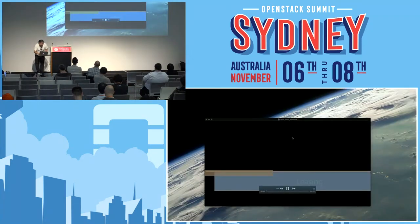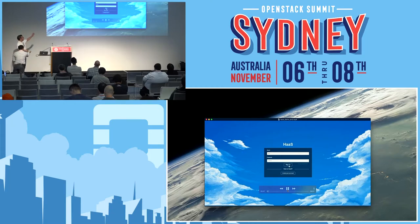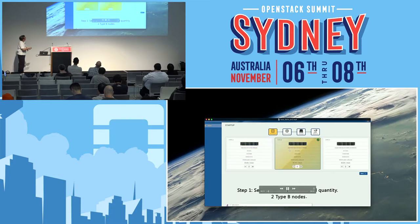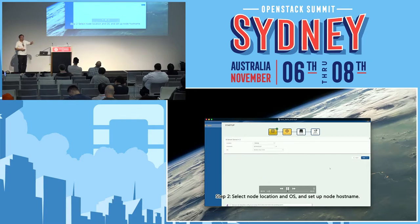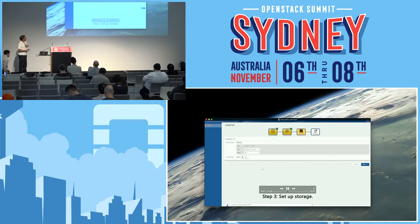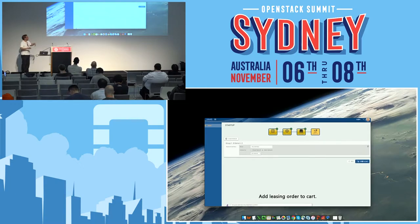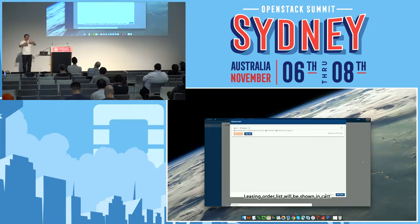A short demo shows how to lease a PDCI. After login, you can select server types — big or small — and choose location, such as west or east United States. You set up storage — hard disk or SSD — and configure the network connecting servers: new network, simple network, or existing network. You add the listing like an e-commerce site, confirm the order, and start provisioning. During provisioning, the system sets up BMC, BIOS, RAID, NIC cards, and so on.